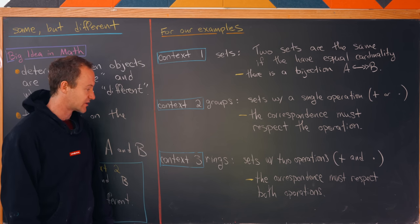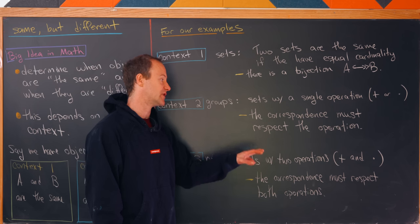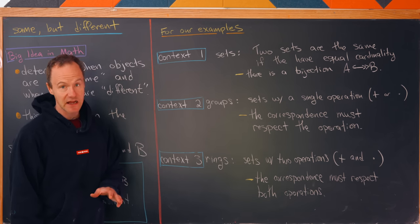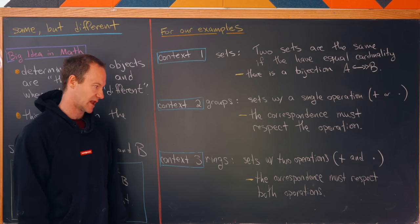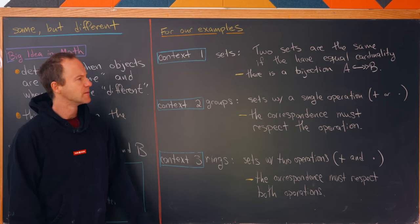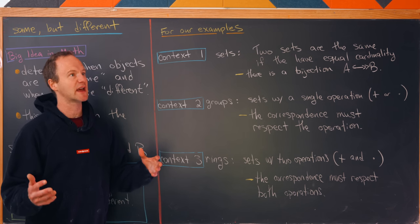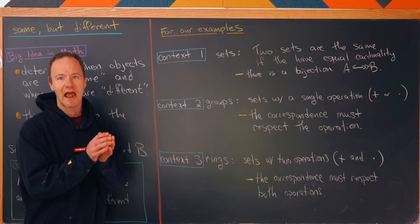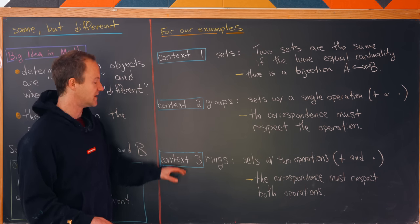Finally, for context three we'll look at something called a ring. A ring is a set with two operations: addition and multiplication. Here the correspondence showing equal cardinality must also respect both operations. Now that we have our setup, let's look at several examples of sets with operations and filter them into sameness and differentness depending on these contexts.